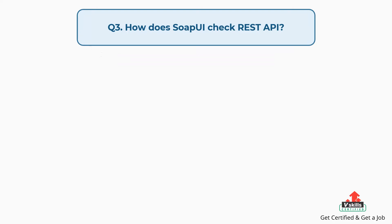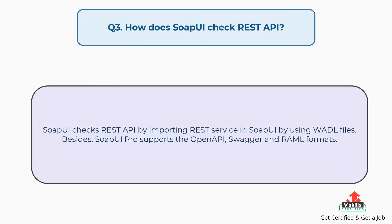Question number three: How does SOAP UI check REST API? SOAP UI checks REST API by importing REST service in SOAP UI by using WADL files. Besides, SOAP UI Pro supports the open API, Swagger and RAML formats.